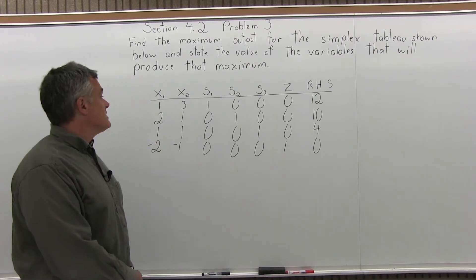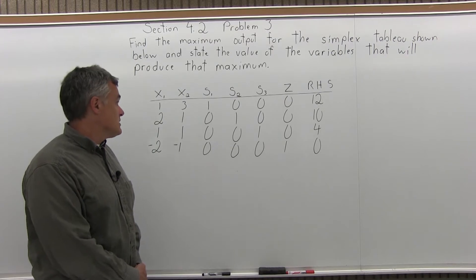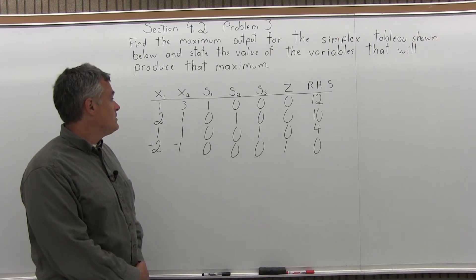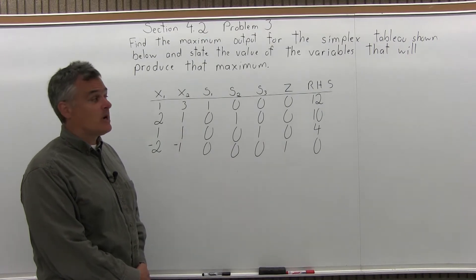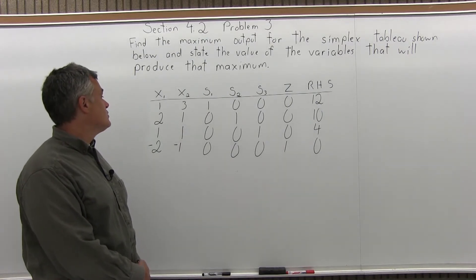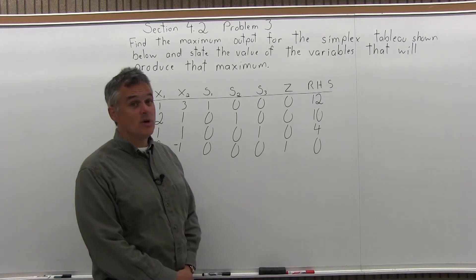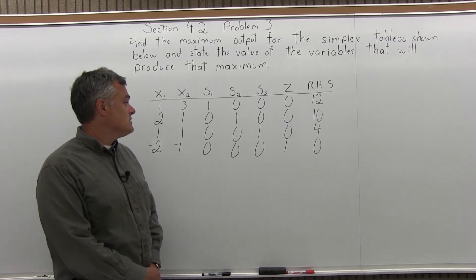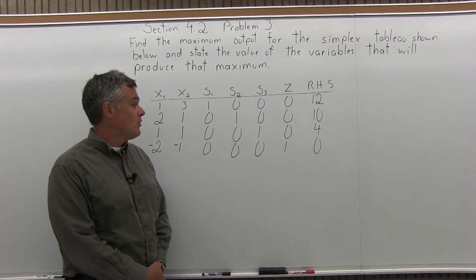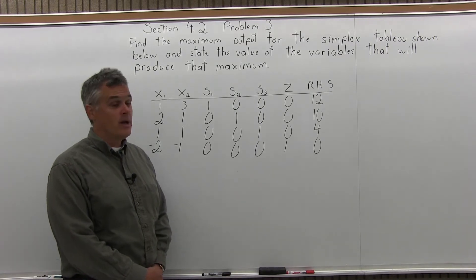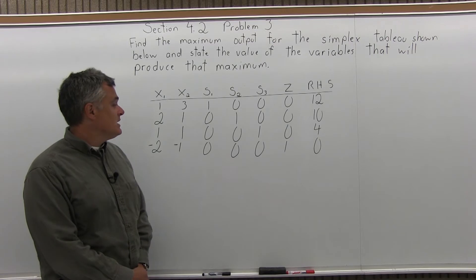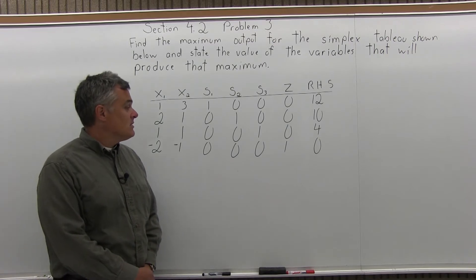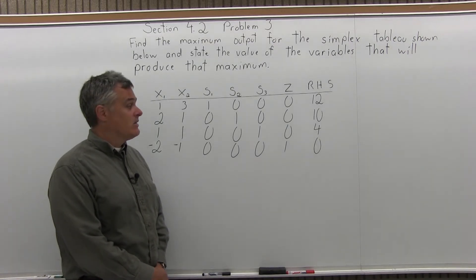We have a simplex tableau that has four rows. The top row is 1, 3, 1, 0, 0, 0, 12. The second row is 2, 1, 0, 1, 0, 0, 10. The third row is 1, 1, 0, 0, 1, 0, 4. And finally the bottom row is negative 2, negative 1, 0, 0, 0, 1, and 0.